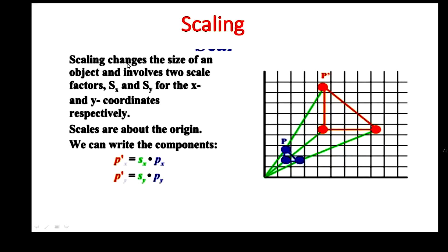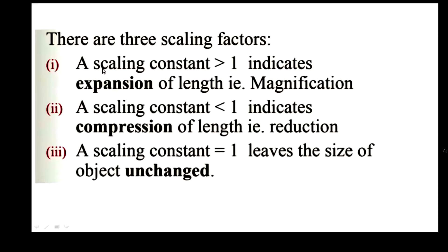Scaling changes the size of an object. It involves two scale factors, Sx and Sy — Sx for x coordinates and Sy for y coordinates. Looking at the picture, p is an object and it is enlarged to p dash shown in red color. The x axis is scaled by Sx and the y axis is scaled by Sy. Scaling can magnify or reduce the size depending upon the scaling factors. If the scaling constant is greater than 1, the object will expand. If less than 1, it will compress or reduce in size. If the scaling constant is 1, the size of the object remains unchanged.